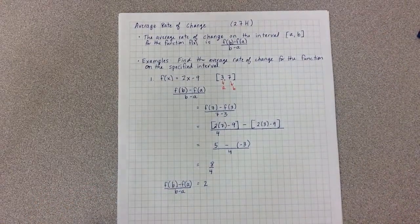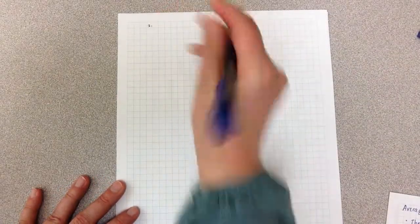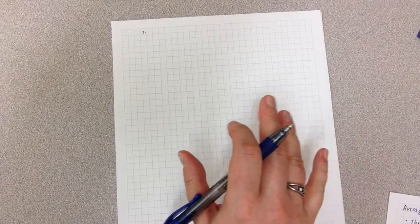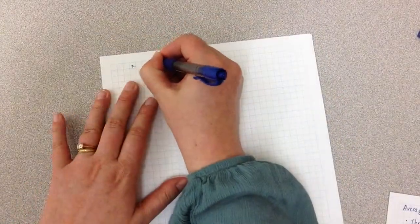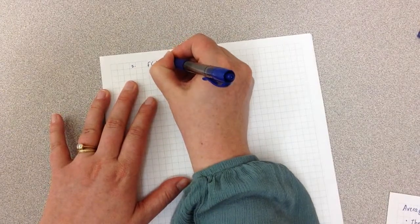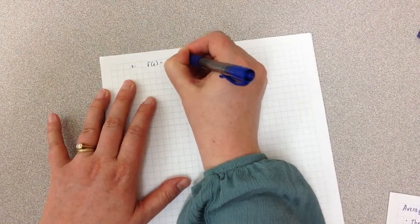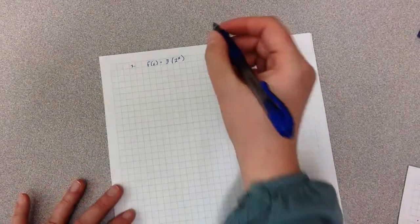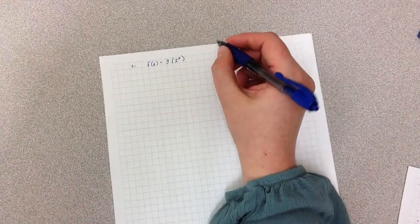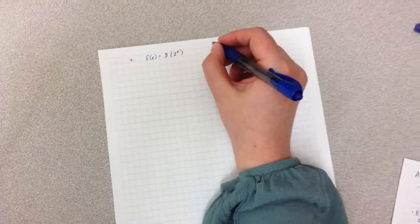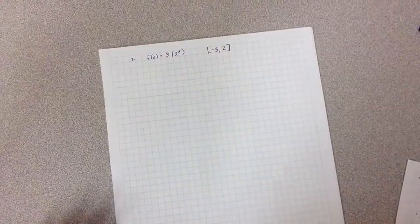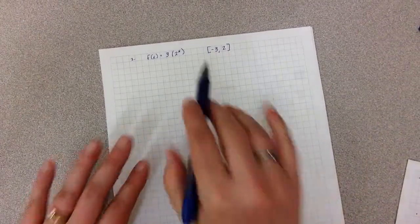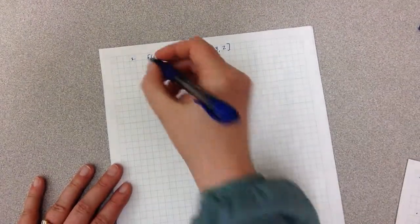Our second example is going to be an exponential equation. In this case, our exponential equation is 3 times 2 to the x power. And I'm looking at the interval from negative 3 to 2. So my smallest x value is negative 3. My largest is 2.